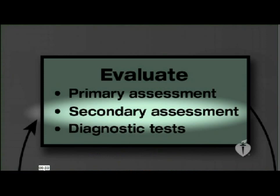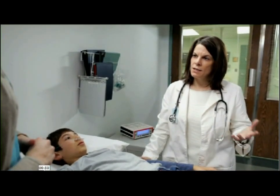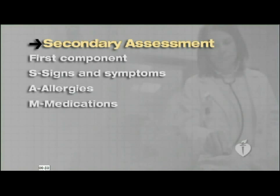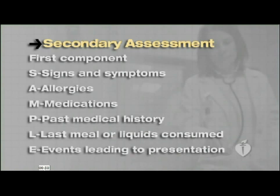The secondary assessment consists of two components. The first component is a focused history, easily remembered using the mnemonic SAMPLE, which stands for signs and symptoms, allergies, medications, past medical history, last meal or liquids consumed, and events leading to the presentation. One goal of the SAMPLE history is to identify important aspects of both the child's history and presenting complaints, especially any information that might help explain the child's presenting problem.